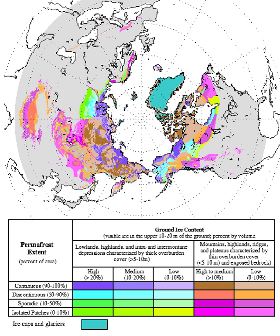In geology, permafrost is ground, including rock or soil, with a temperature that remains at or below the freezing point of water — 0 degrees Celsius — for two or more years.